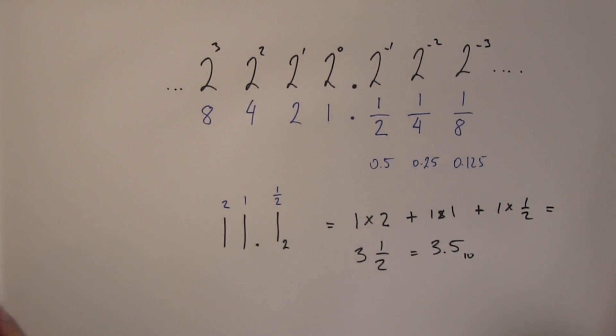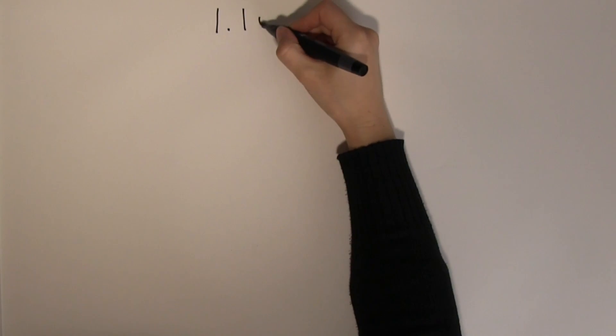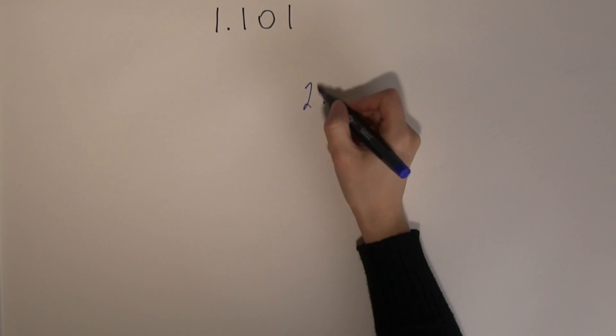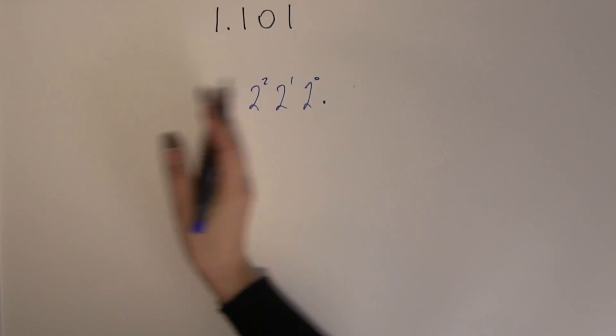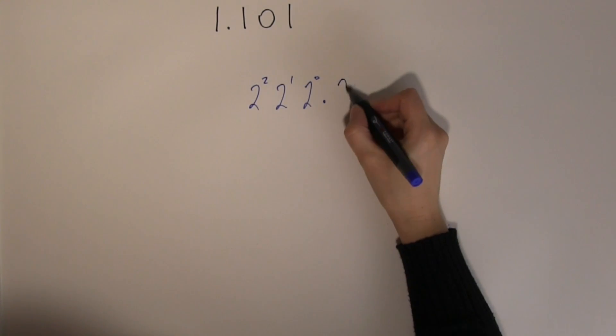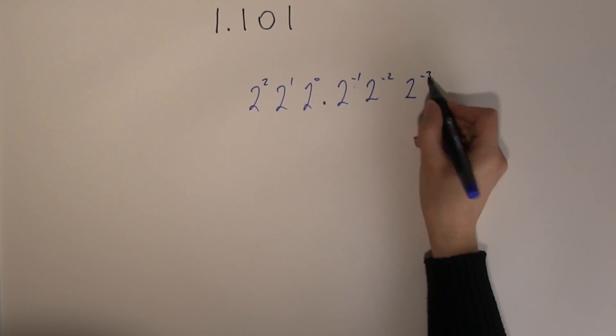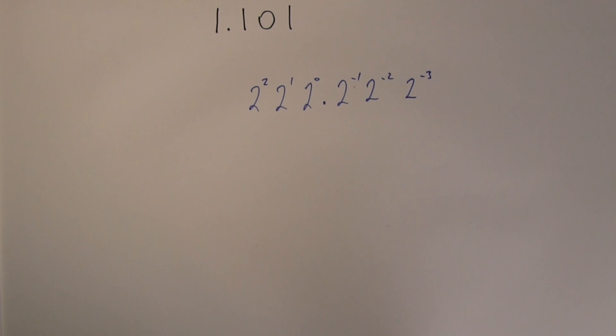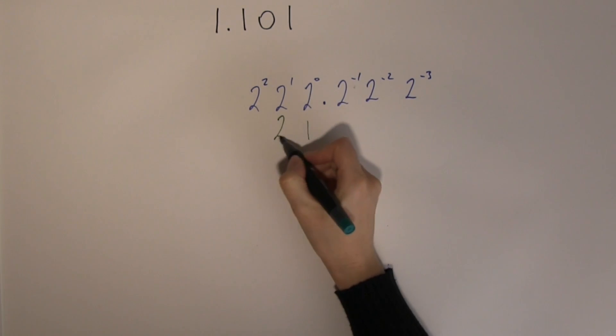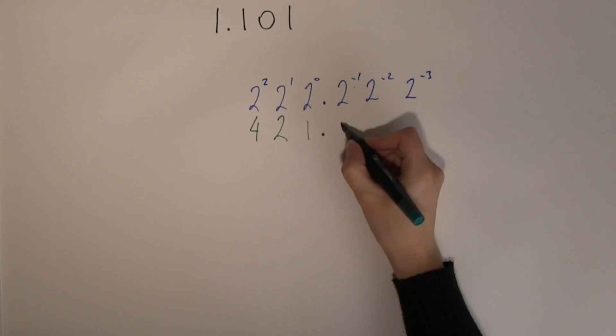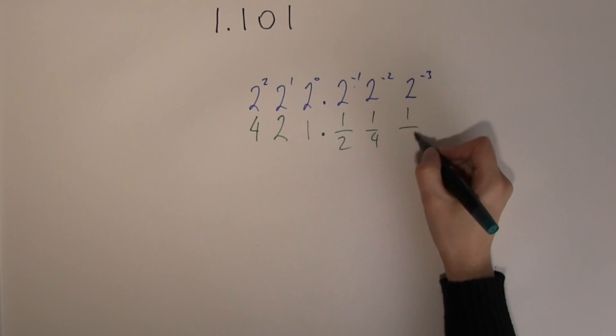Let's look at another example: 1 radix point 1, 0, 1. Build the binary place value table with the radix point in the middle: to the left we have 2 to the 0, 2 to the 1, 2 to the 2, giving values 1, 2, 4. To the right we have 2 to the minus 1, 2 to the minus 2, and 2 to the minus 3, which are a half, a quarter, and an eighth.